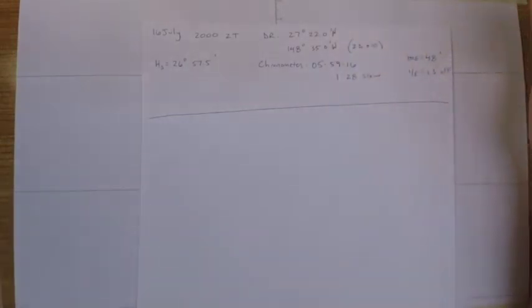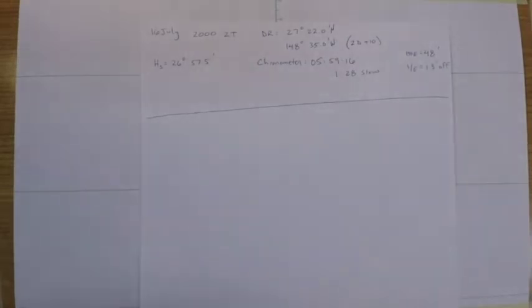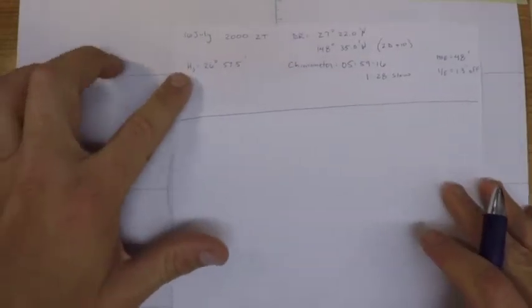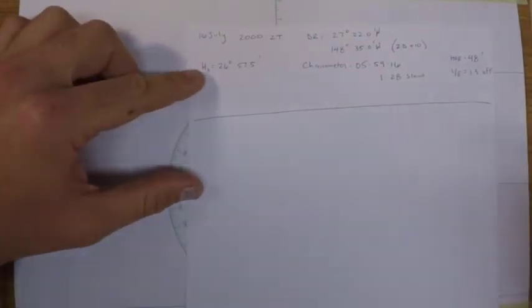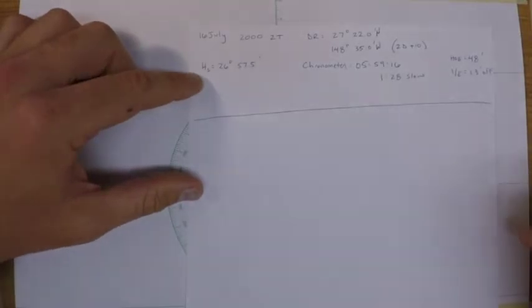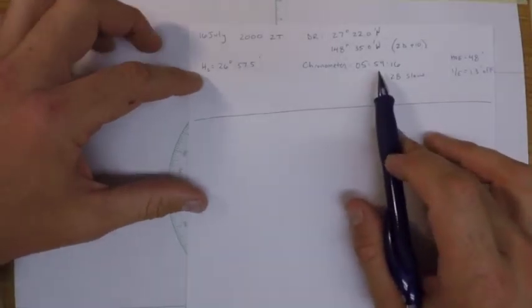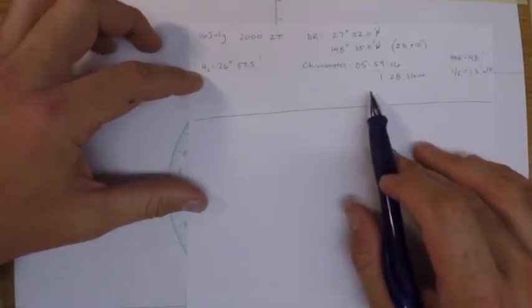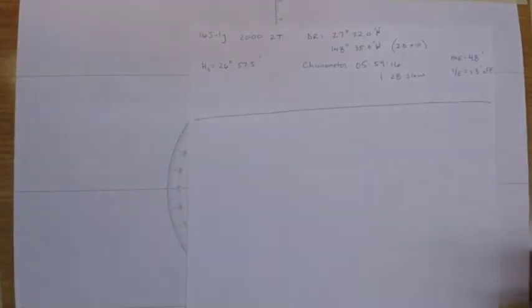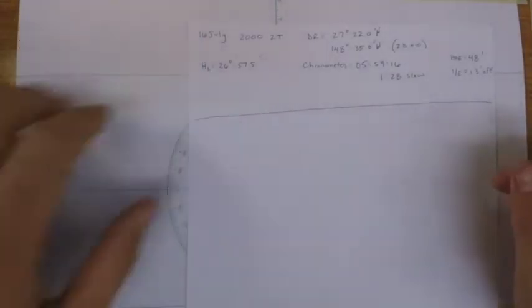Our height of eye, index error, and height of our sextant. Unlike problem number nine, this information requires some correction. And our chronometer error. So the first thing we can do is correct our chronometer.